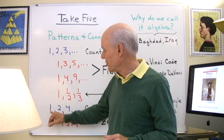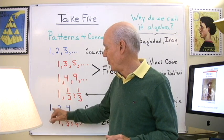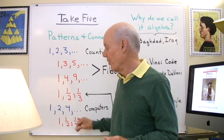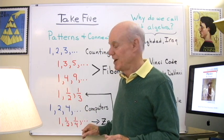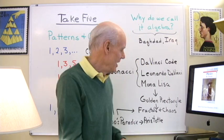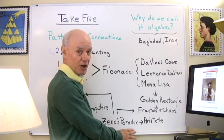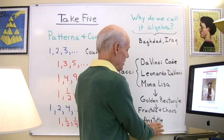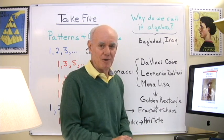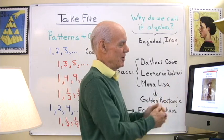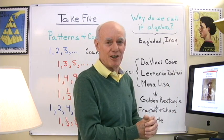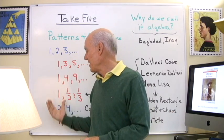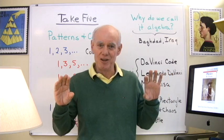One of the things we want to look at is the reciprocals of these numbers: 1 over 1 which is 1, 1 over 2, 1 over 4, 1 over 8 — the reciprocals of the powers of 2. That's going to connect us with something called Zeno's paradox, and Zeno's paradox will connect us with the Greek philosopher and mathematician Aristotle. There's a picture here of Aristotle's book Physics. So patterns and connections — that's one of the themes that's going to run through these Take Five videos.